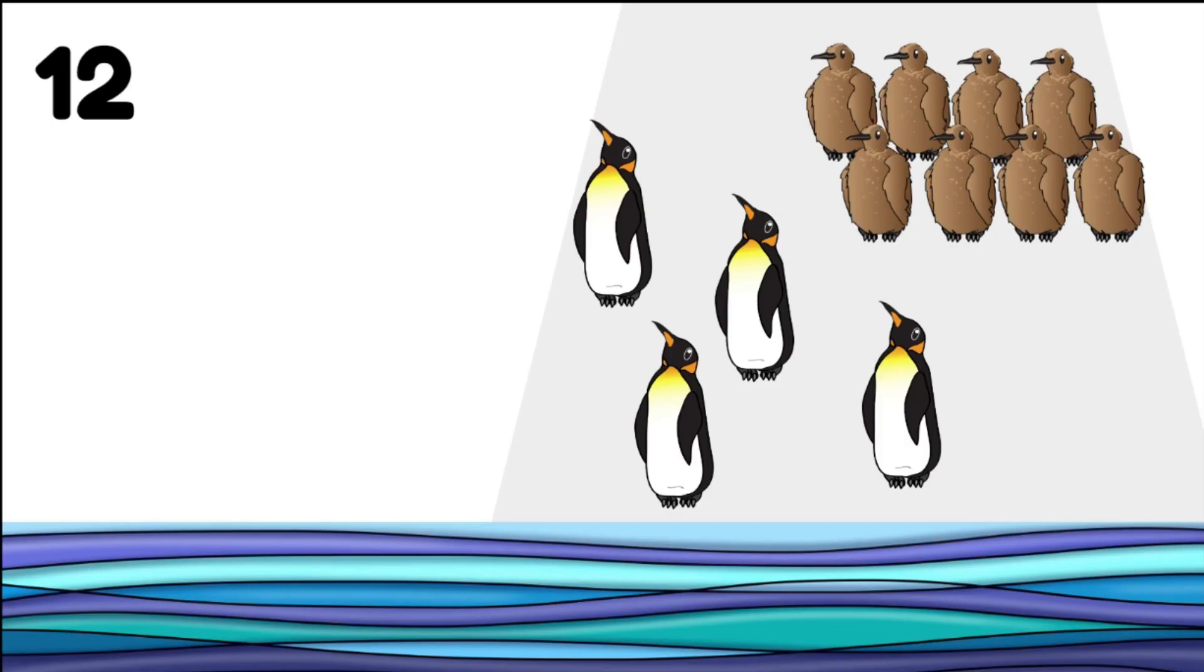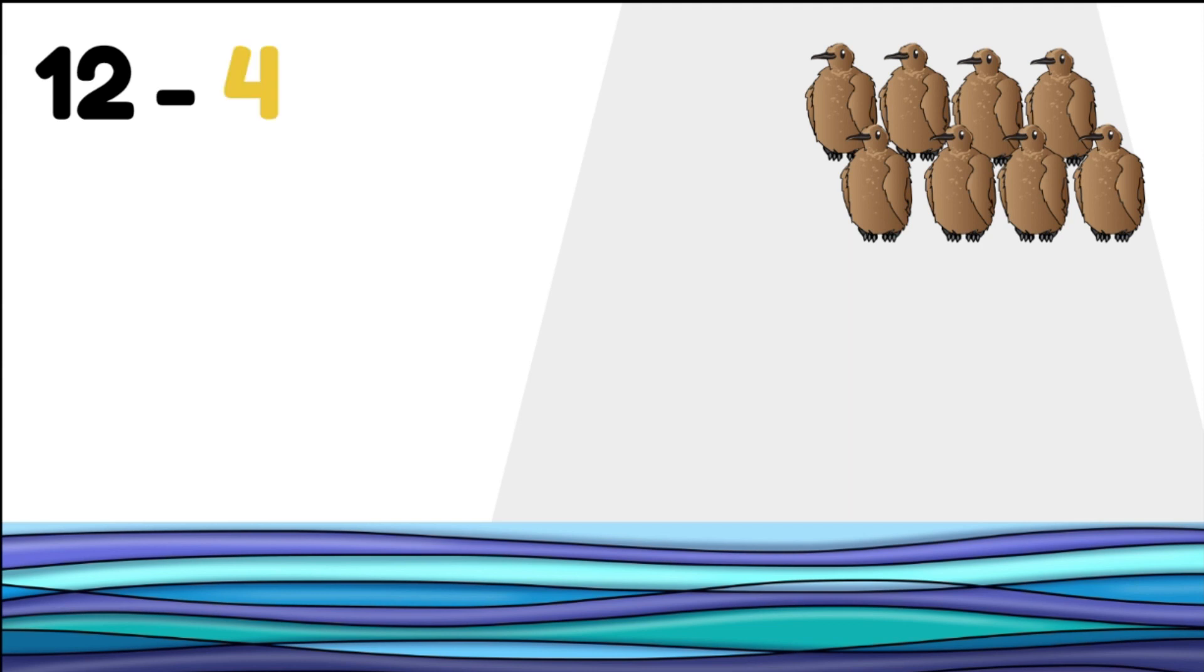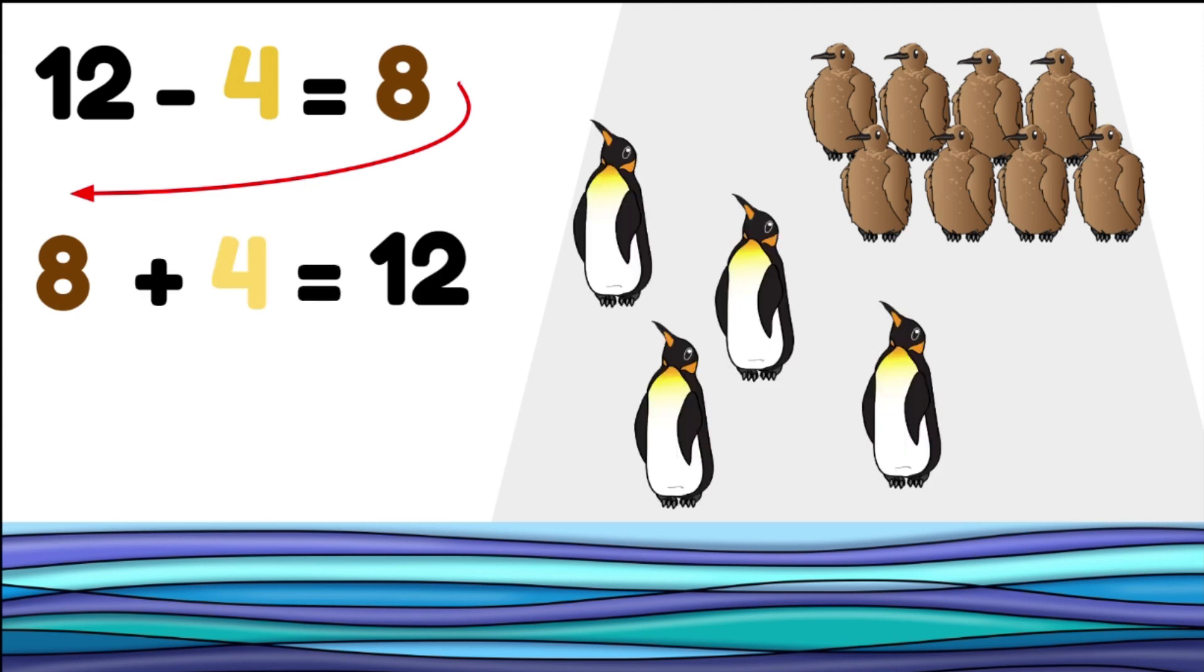If I have twelve penguins on the ice and four of the penguins dive in to fish, then I have eight penguins left on the ice. Let's do the reverse. There are eight penguins. If four come back, then I now have twelve penguins on the ice altogether.